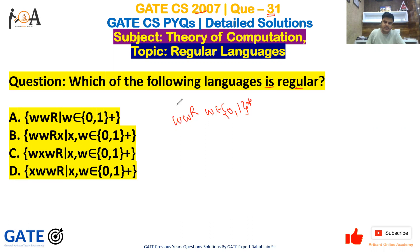In this problem, comparison is required. For this comparison, let's say my string is 001, then wR should be 100. For that, stack memory is required, and if stack memory is required infinite times, then I can say that it is CFL, context-free language.